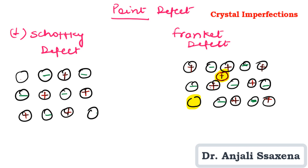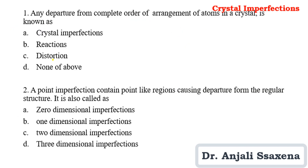Now we solve crystal imperfection MCQs. Question 1: Any departure from the complete order of arrangement of atoms in a crystal is known as — that is the definition of crystal imperfection. Question 2: A point imperfection contains point-like regions causing departure from the regular structure. It is also called — this is the definition of point imperfection, which is a zero-dimensional imperfection.